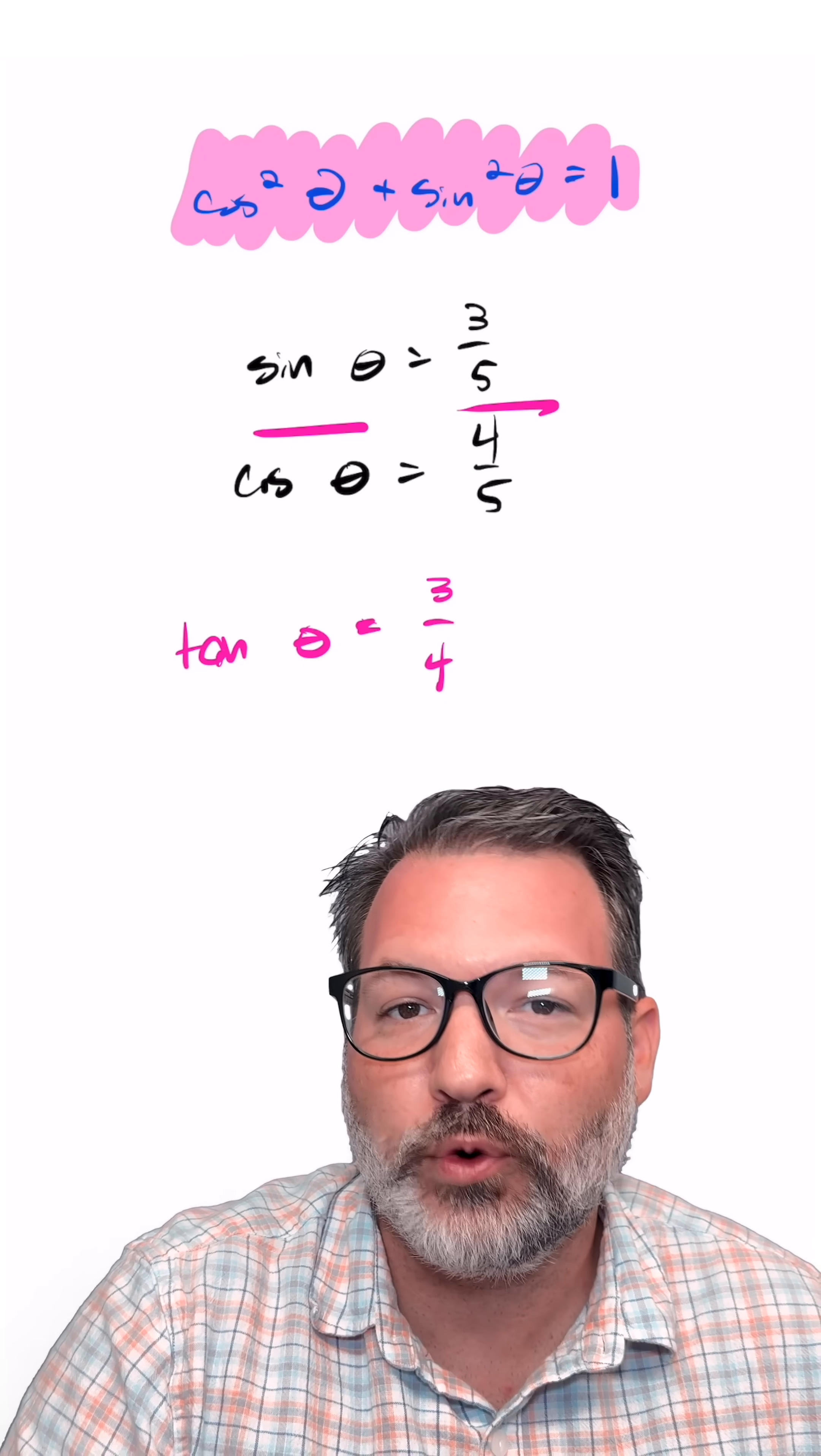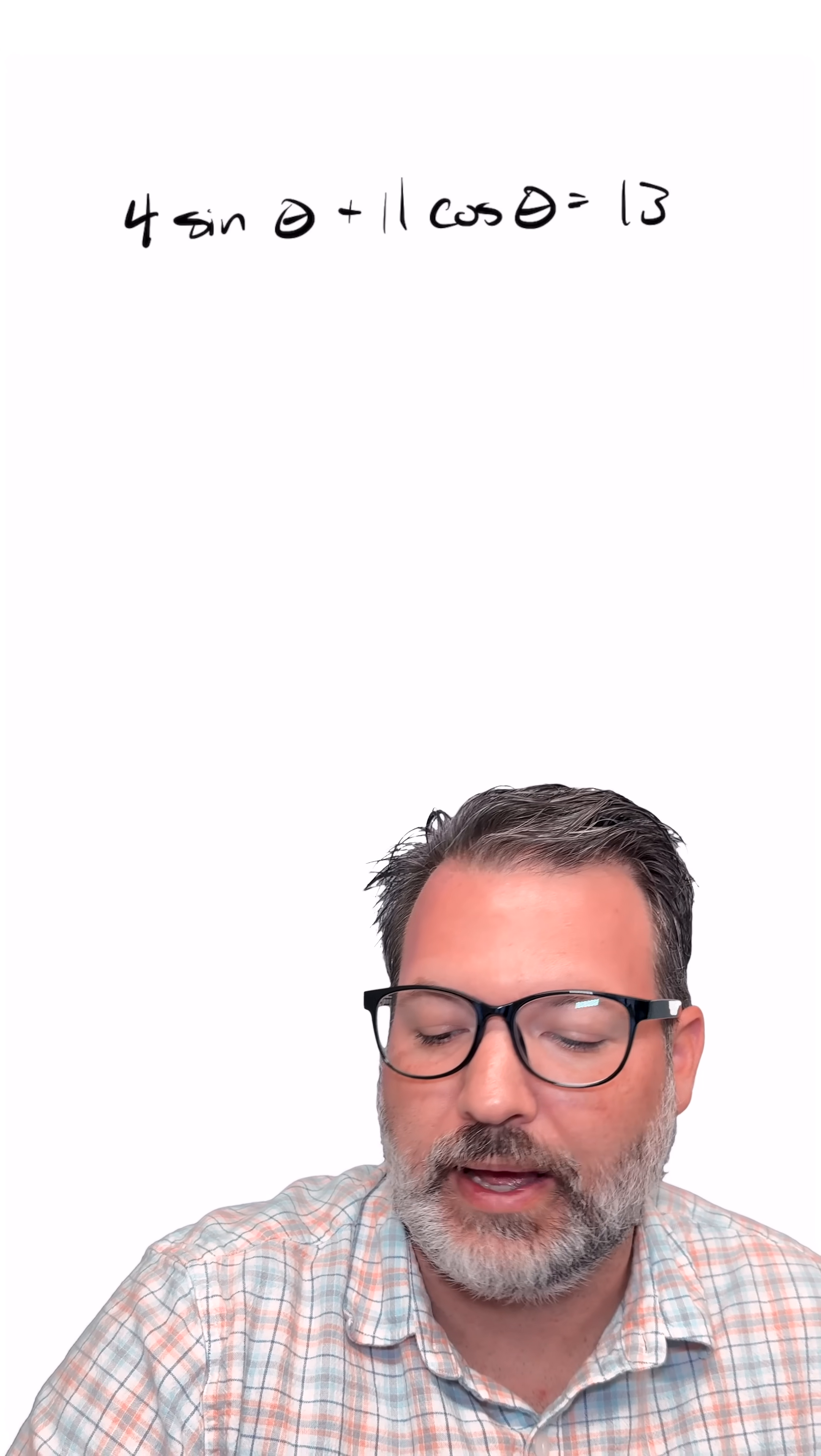while the cosine of theta is 4 fifths. If we had some other random equation we had started with, like 4 times sine of theta plus 11 times cosine of theta equals, I don't know, 13,